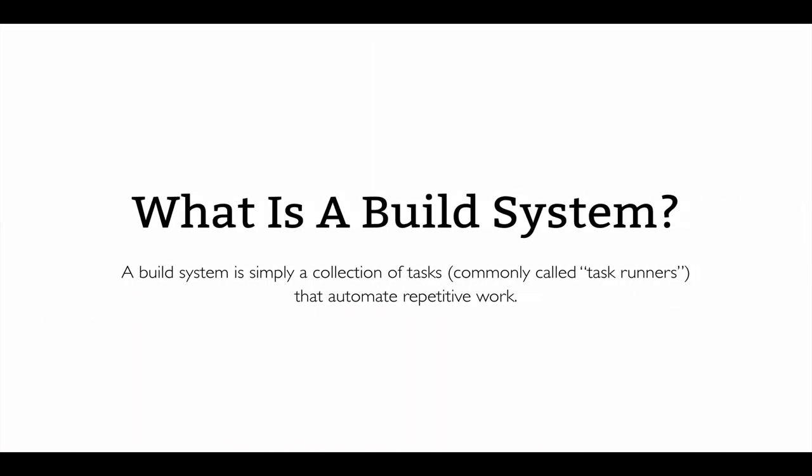So what is a build system? A build system is simply a collection of tasks, commonly known as task runners, that automate repetitive work. These tasks can be anything from compiling pre-processed CSS and JavaScript to concatenation, minification, firing up a server for automatic browser reloading, and even things like creating deployment builds.